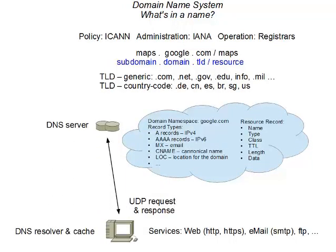Here's a general view of how the domain name system works. If we start at our host and we're going to make an HTTP query to maps.google.com, then our web service using HTTP is going to call on the DNS service on the host. That host service serves not only web requests, but also email requests, FTP, and other services that use the internet. The request is a UDP request, so it is connectionless, and it is sent to a DNS server.